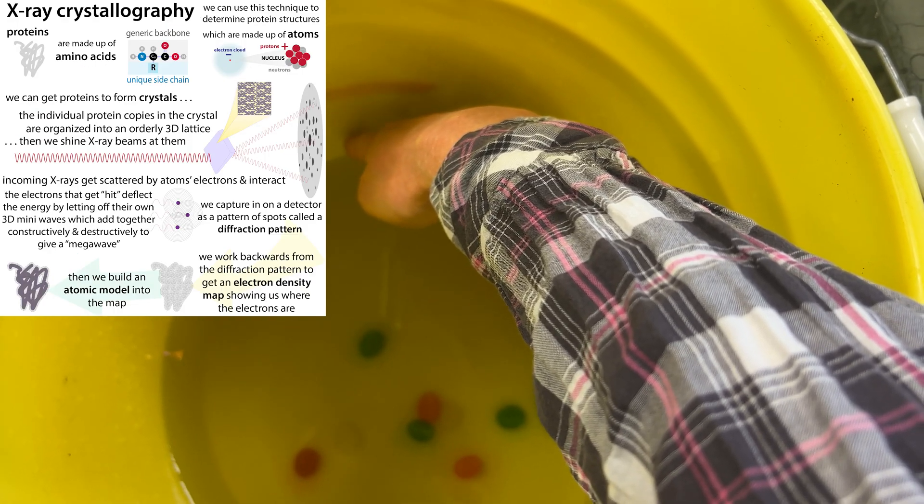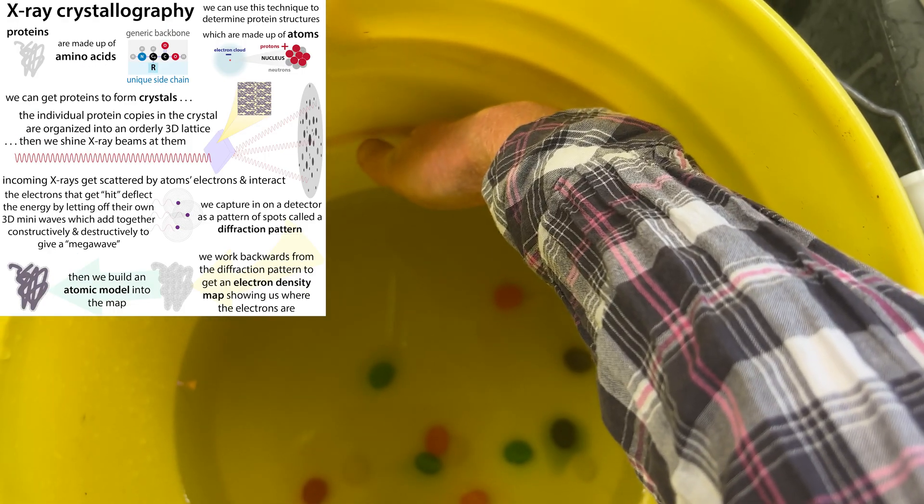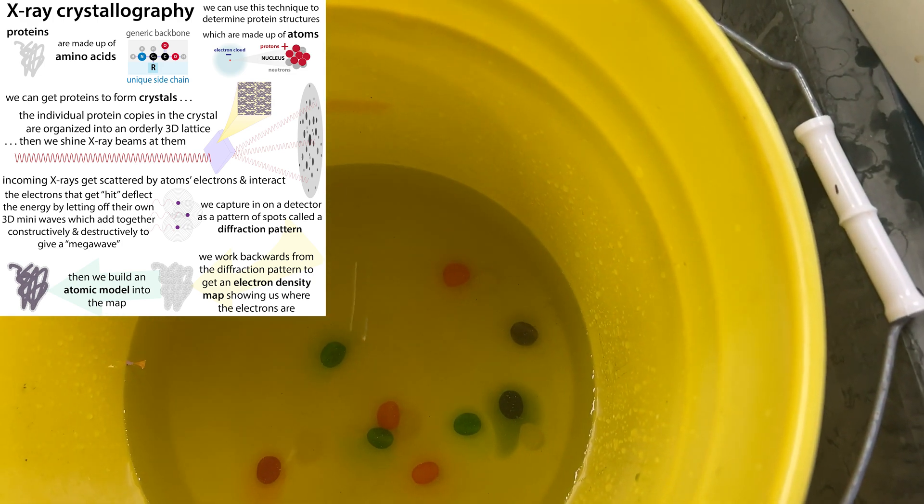They can then, using math called a Fourier transform, work backwards from that position where they detected that mega wave and use a Fourier transform to figure out each of the little waves, each of those mini waves that was given off.